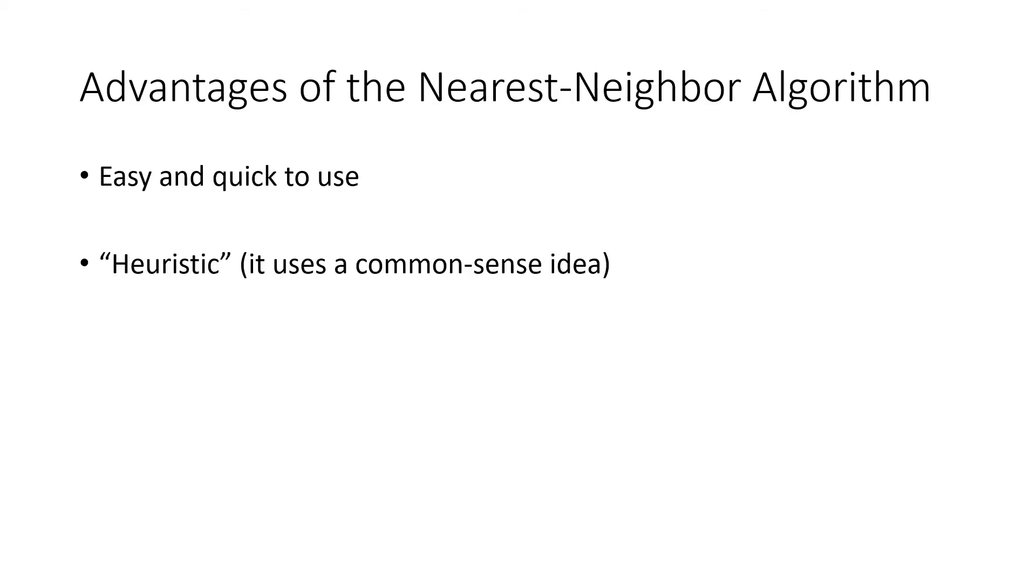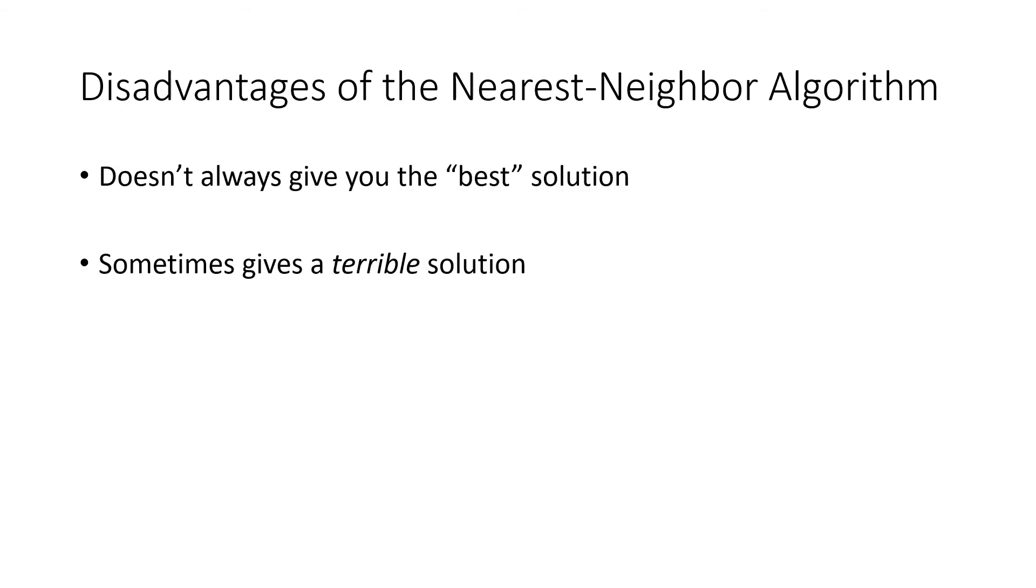So the advantages of the nearest neighbor algorithm is that it's easy and quick to use. It's much faster than the brute force method. And it's what we call heuristic. So heuristic is just a fancy word that means that it uses a common sense idea. This idea of, you want to travel to these different locations, always go to the closest one from where you're at.